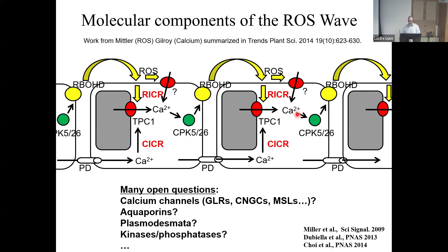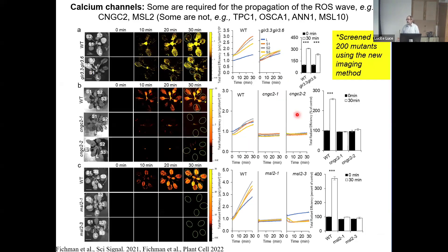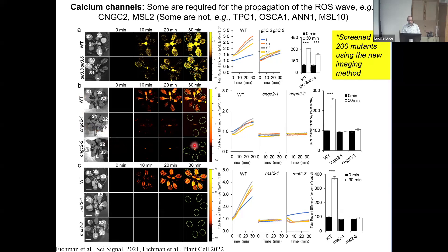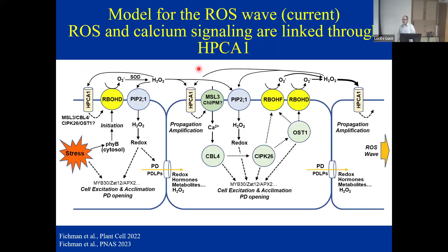Having developed this imaging method, we could screen over 200 mutants. For example, CNGC2: in response to highlight stress, wild type shows a clear response, but two independent CNGC2 mutants show no response. GLR3.3 and GLR3.6: in response to highlight, the ROS wave is suppressed; in response to wounding, there is no ROS wave at all. So you can start dissecting this pathway. This is the current model: we know that stress will activate...